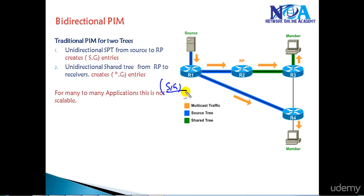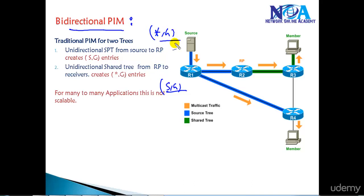To overcome these issues we can use Bidirectional PIM, which is a feature designed for many-to-many applications. It is going to allow only the shared tree, that is star comma G entries, and it ensures that it will never create a shortest path. When the source sends multicast, traffic always goes via the RP and from the RP down to the receivers — no shortest path is created from source to receiver.